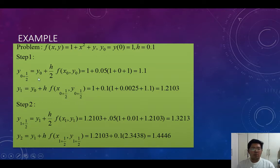For y_1, using the formula y_0 + h * f(x_{0+1/2}, y_{0+1/2}) = 1 + 0.1 * (1 + 0.0025 + 1.1) = 1.2103.